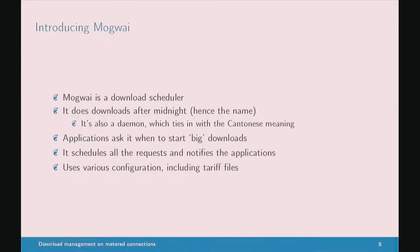So we wrote Mogwai. It's a download scheduler. Applications which want to do big downloads tell the scheduler what they want to download — its size, the domain name you're downloading it from, and other metadata like that. The scheduler schedules all the incoming requests for downloads and signals each application when it's time to start downloading. The scheduler can also preempt downloads — tell an application to pause its download and carry on later — giving you prioritization in more real time.